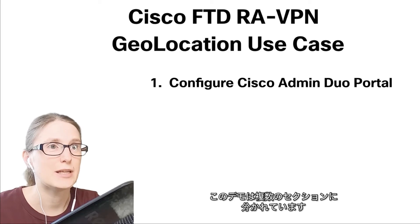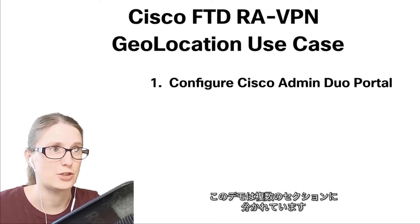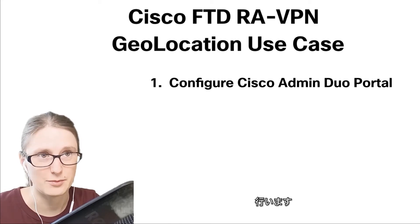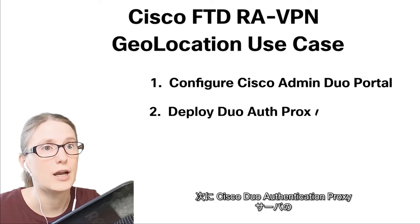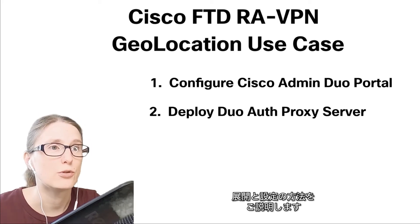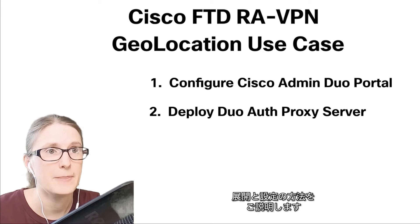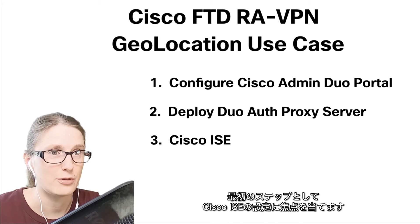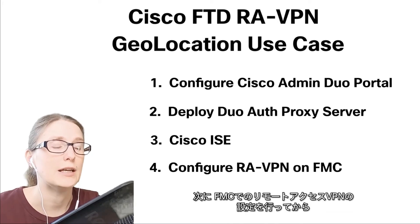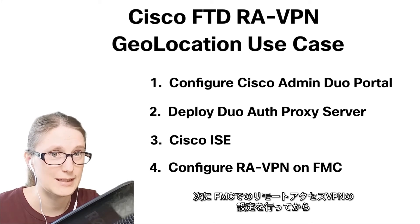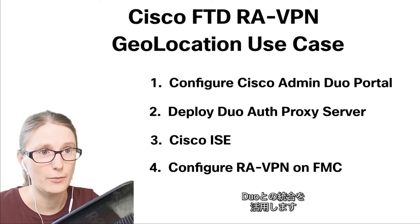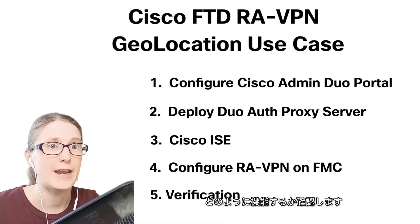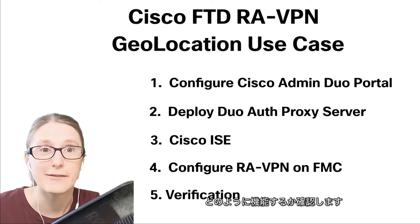This demonstration is split into various sections. We are going to perform all configuration necessary for the Cisco Duo admin portal first, then move to deploying and configuring the Cisco Duo authentication proxy server. Then we will focus on the Cisco ISE configuration, followed by configuration of remote access VPN on FMC leveraging the integration with Duo. Lastly, we are going to verify all that has been configured and showcase this feature in action.